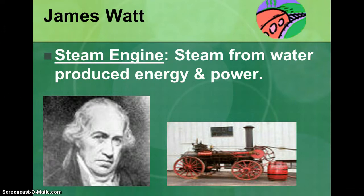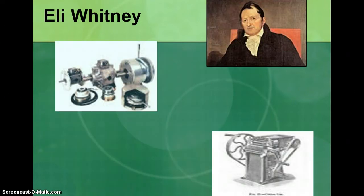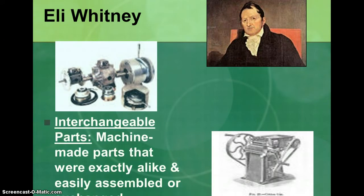Then I'm going to talk about Eli Whitney. Eli Whitney was also an inventor and he invented interchangeable parts — a machine is made of parts so that if one part of the machine does not work, you just change that part. This was a major invention that shaped the machines we use today, because now in a car, when a car breaks down, we fix the source of the problem instead of replacing the entire car.